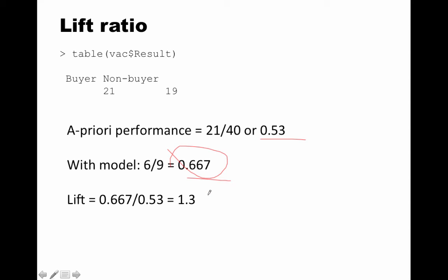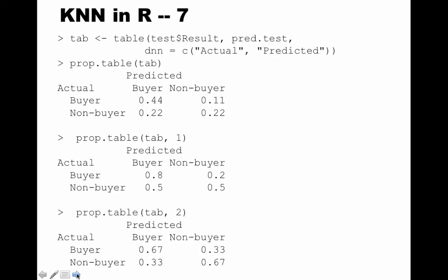The model improved performance from 0.53 to 0.667. The lift is 0.667 divided by 0.53, giving a lift of approximately 1.3. We can also look at proportions instead of raw counts by storing the table result and applying prop.table — we're getting two decimal places because we set options(digits=2) earlier.